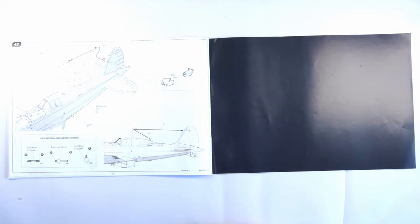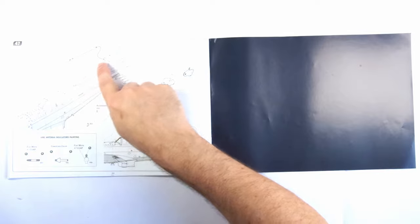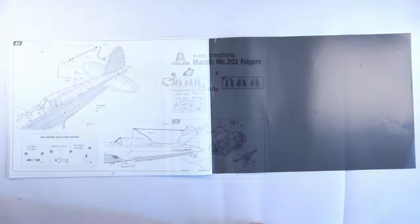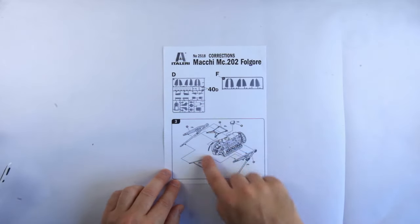The kit even includes fine wire for the aerial as shown on the last page of the instruction book. The errata sheet shows the corrected position of some parts and an amended version of one of the engine construction steps.